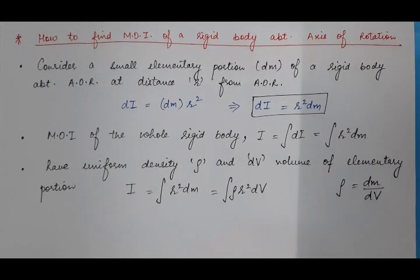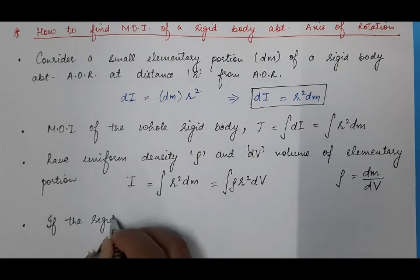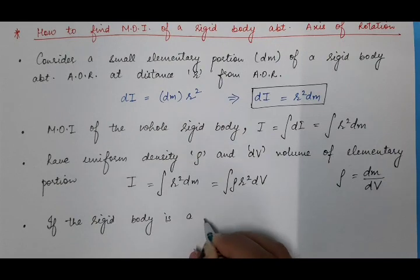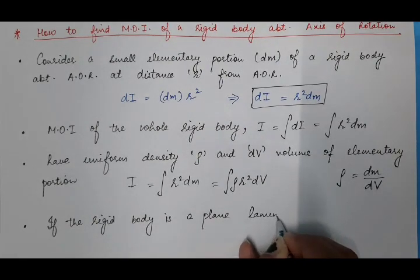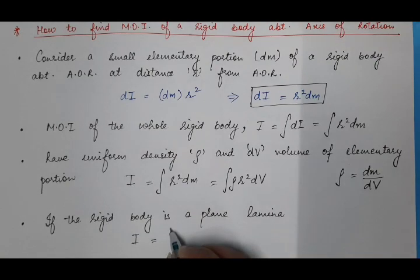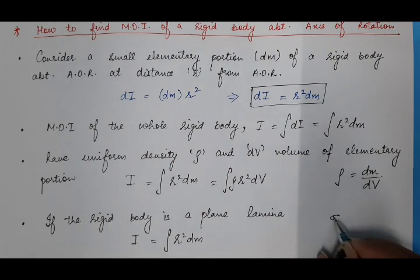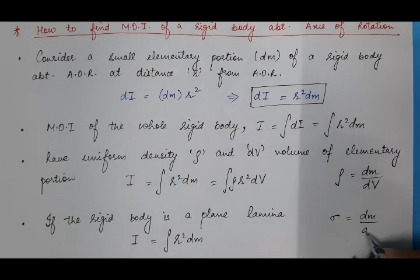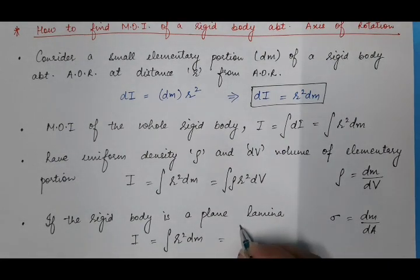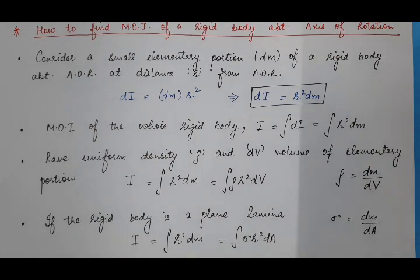If the rigid body is a plane lamina, the mass is distributed over an area. The surface density is denoted by σ (mass per unit area), and dA is the area of the elementary portion, so dm = σ dA. The moment of inertia becomes I = ∫σ r² dA. These expressions allow us to find the moment of inertia of any rigid body rotating about an axis.